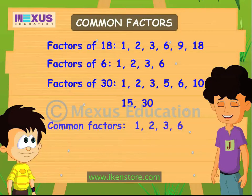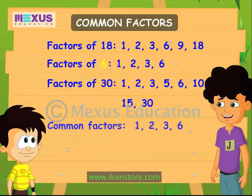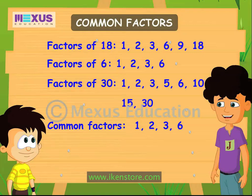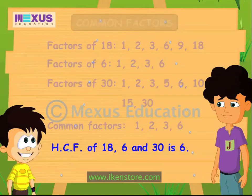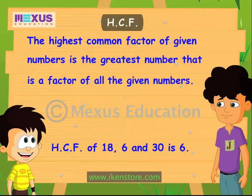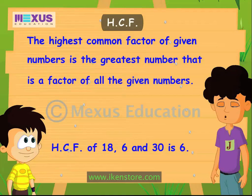Great! Now look at the number 6. Out of all the common factors of 18, 6, and 30, 6 is the largest one. This is known as the highest common factor, or HCF — the greatest number that is a factor of all the given numbers. I'll remember that. Yes, you should.